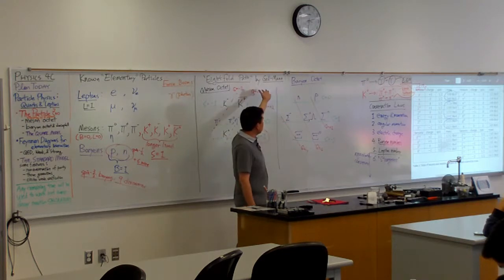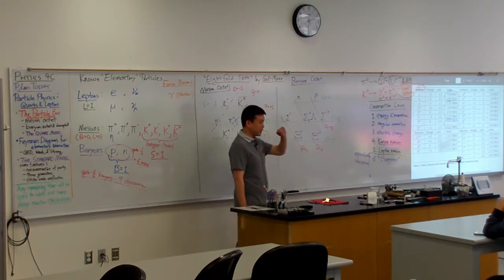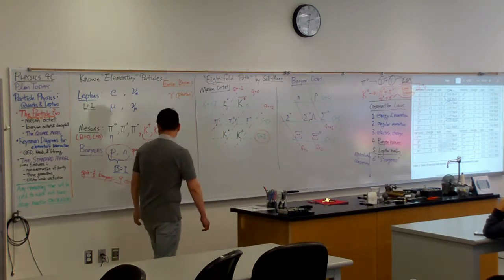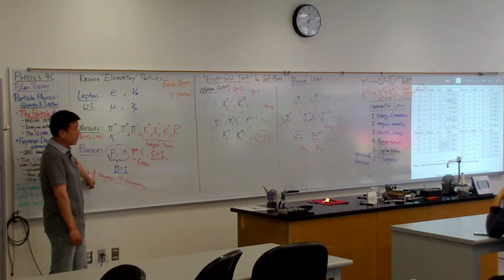And Gell-Mann's theory was one that actually predicted existence of a particle, a new particle, down to the correct mass, and how to produce them. And that comes with the next set of baryons. So, I said with the baryons, there are actually spin three-half baryons.